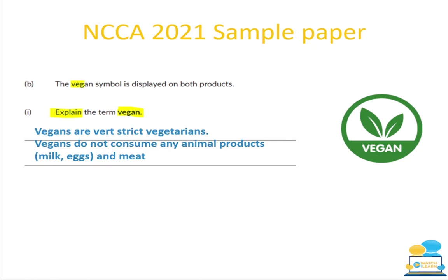Here is the NCCA 2021 sample paper. It says: 'The vegan symbol is displayed on both products. Explain the term vegan.' Highlight the action verb 'explain,' meaning you need full sentences and detail, and highlight 'vegan.' A sample answer: vegans are very strict vegetarians who do not consume or eat any animal products such as milk, eggs and meat. Always go back over exam questions after studying a topic.